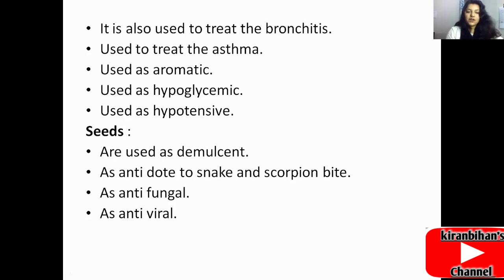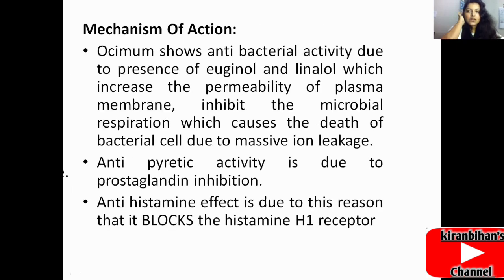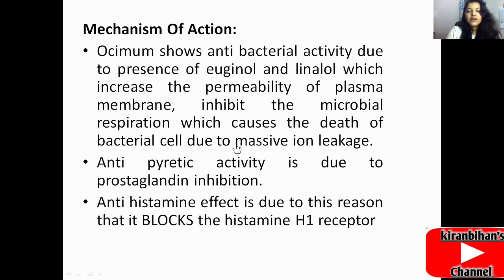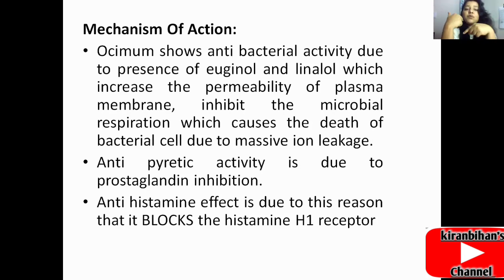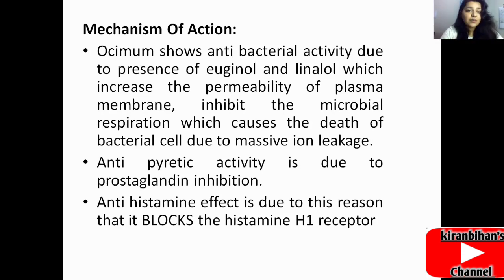The mechanism of action of Ocimum basilicum: it shows antibacterial activity due to the presence of eugenol and linalool, which increase the permeability of the plasma membrane and inhibit microbial respiration, causing the death of bacterial cells due to massive ion leakage. These two ingredients permeate and increase cell membrane permeability, allowing the inner contents of the cell to come out and destroy the cell. The antipyretic activity is due to prostaglandin inhibition.